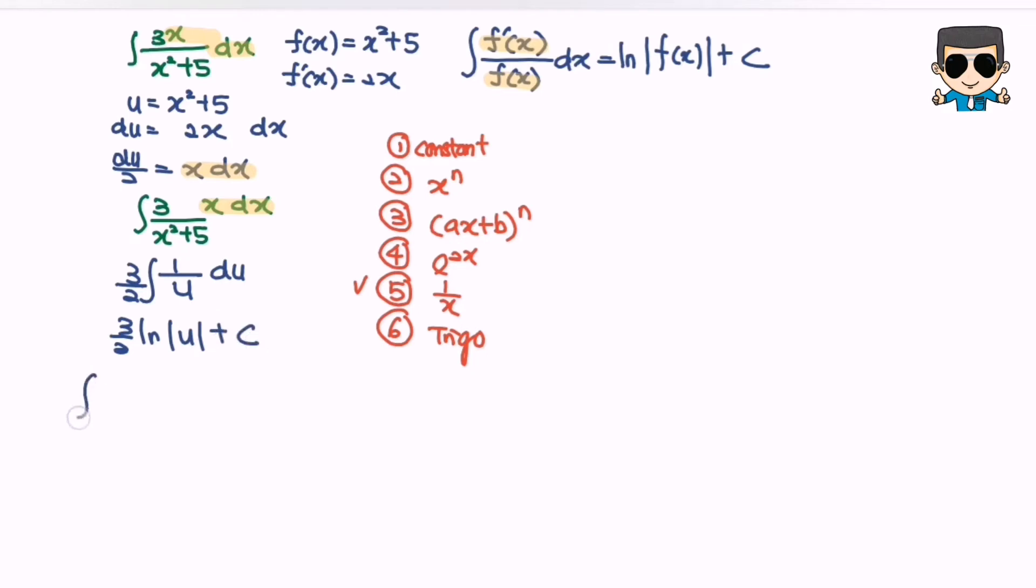So what will we have? Integrate 3x over x squared plus 5 with respect to x equals 3 over 2 ln, where u will be x squared plus 5, plus c. So here we are and thanks for watching.